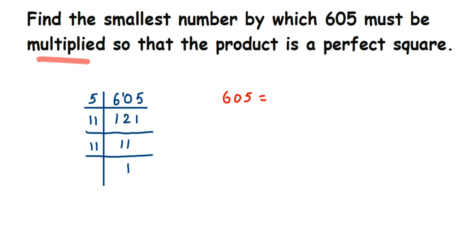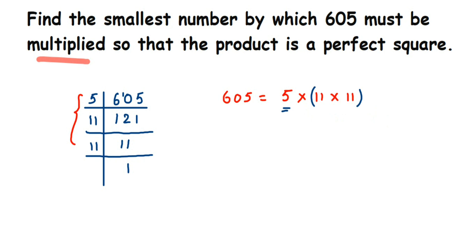Now we have 605 = 5 × 11 × 11. For a number to be a perfect square, all the prime factors must be in pairs. You can see that 11 appears twice, forming a proper pair. But 5 is single — it doesn't have a pair. So 605 is not a perfect square.